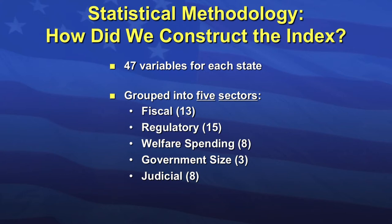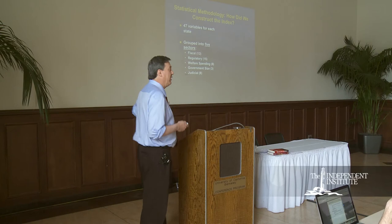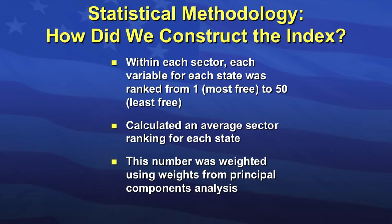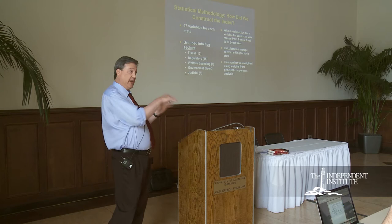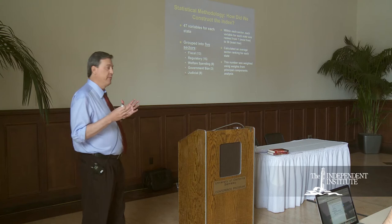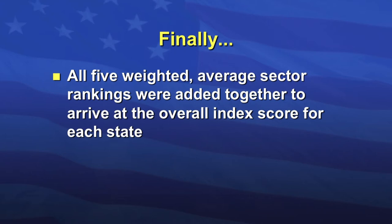The number in parentheses indicates how many variables are within each sector — similar to how Heritage divides things. For each variable we ranked all 50 states from 1 (freest) to 50 (least free), then averaged rankings within each sector. We then weighted each sector's average score using principal components analysis, which weights sectors according to how much variation exists between states, since it's easier to differentiate states when there's more variation. Finally, we summed the five weighted sector averages and ranked all states.